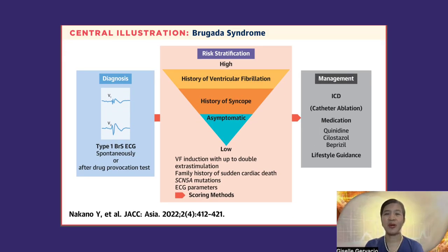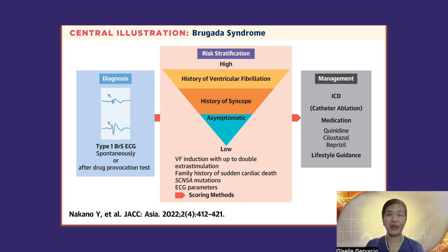This inverted pyramid shows the risk in terms of Brugada syndrome presentation. Those that have suffered sudden unexplained death or ventricular fibrillation are at highest risk. This is followed by those with syncope, blackouts, presyncope, cardiac seizures, and the like. Fortunately, those that are asymptomatic — which probably accounts for the majority of those with the ECG pattern — are at no risk and do not warrant treatment at this moment.